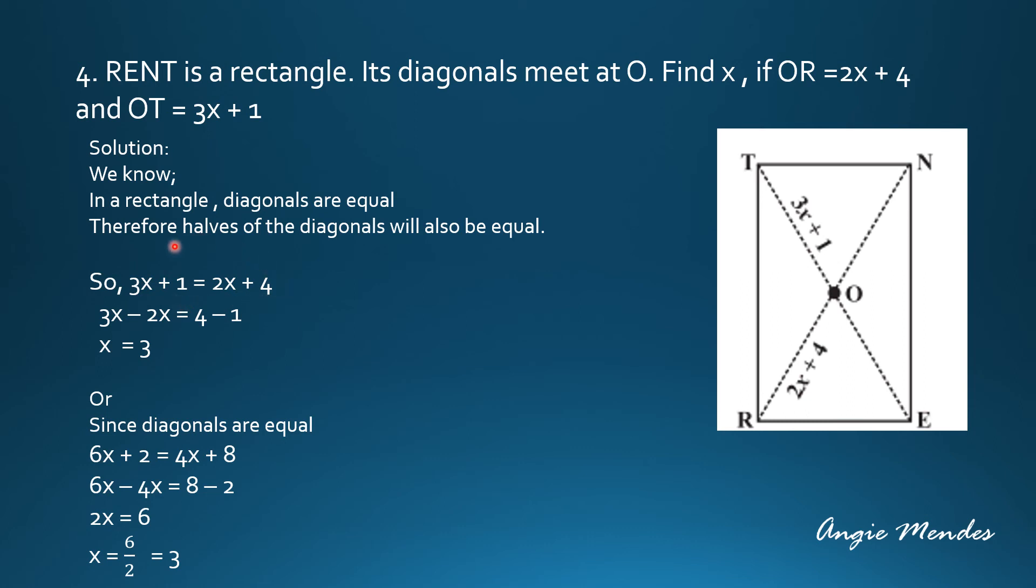We are considering the halves of the diagonals as equal and we are proceeding. So keeping the X variables on one side, we get 3X minus 2X is equal to 4 minus 1 and we will get X is equal to 3.